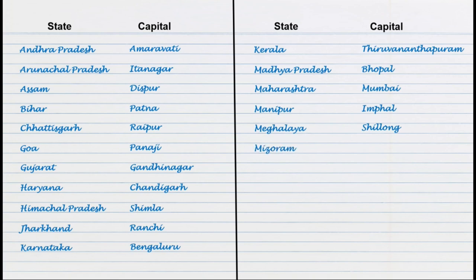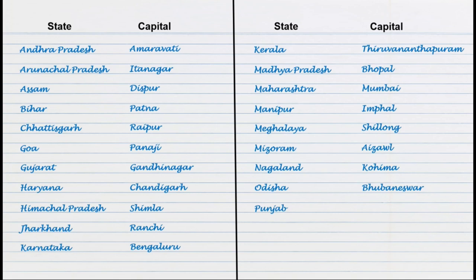Mizoram, Aizol. Nagaland, Kohima. Odisha, Bhubleswar. Punjab, Chandigarh.